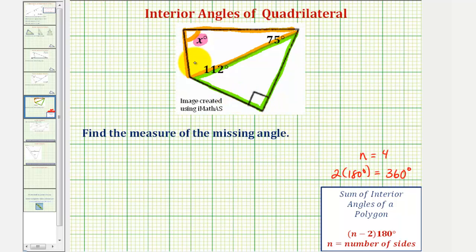Where the sum of these three angles would be 180 degrees, and the sum of these three angles would also be 180 degrees, giving us a total sum for the interior angles of the quadrilateral of 360 degrees.